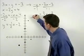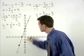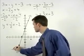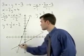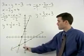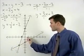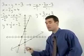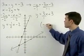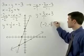If we graph our two lines, you can see that our point of intersection has the coordinates negative 2, negative 3. So that's the solution to our system.